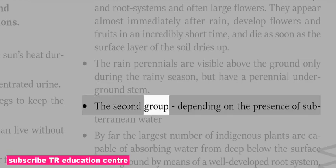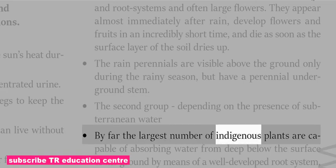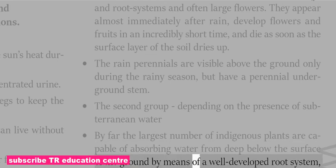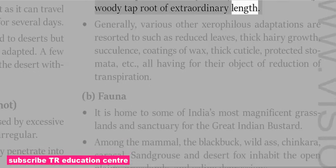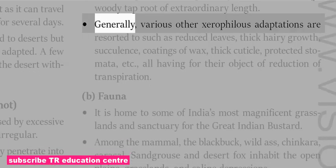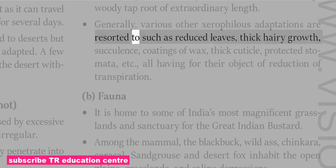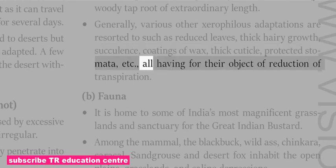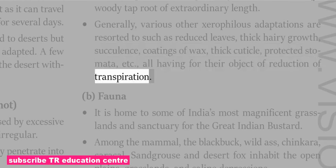The second group depends on the presence of subterranean water. The largest number of indigenous plants are capable of absorbing water from deep below the surface by means of a well-developed root system, the main part of which generally consists of a slender, woody taproot of extraordinary length. Various xerophilous adaptations are also employed, such as reduced leaves, thick hairy growth, succulents, coatings of wax, thick cuticle, and protected stomata — all having the objective of reducing transpiration.